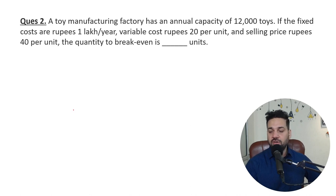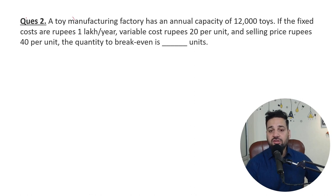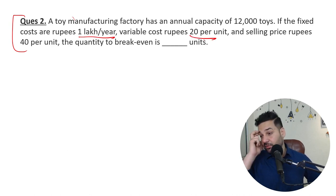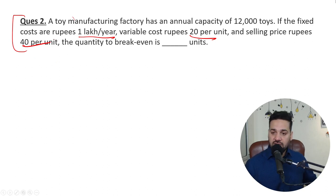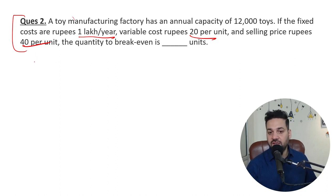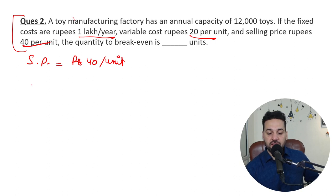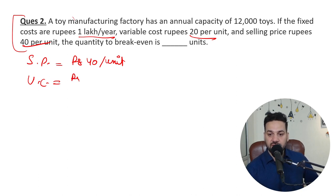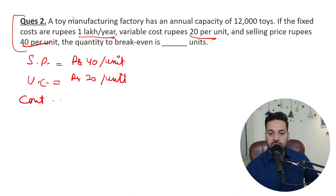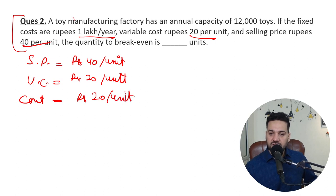A toy manufacturing unit has an annual capacity of 12,000 toys. The fixed costs are rupees 1 lakh per year, variable cost is 20 per unit, and selling price is rupees 40 per unit. To find the break-even quantity, the selling price per unit is rupees 40 and variable cost is rupees 20 per unit. So contribution is rupees 20 per unit.